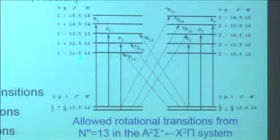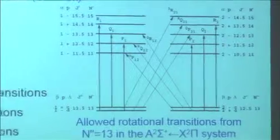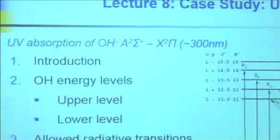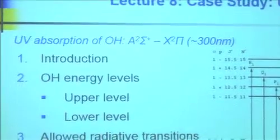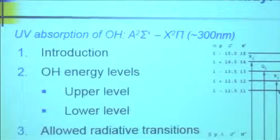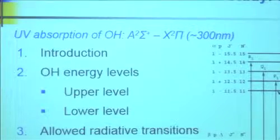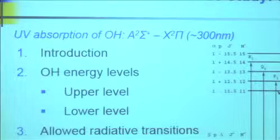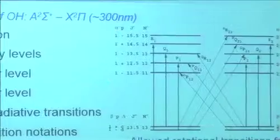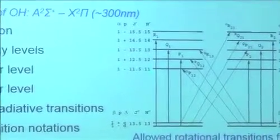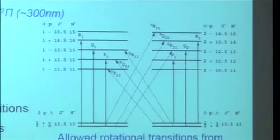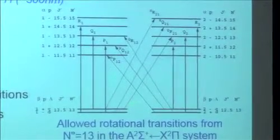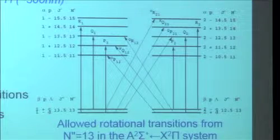Now up in the A²Σ case — lambda is zero. This is analogous to the uncoupled case I showed for oxygen. Each of these has ones (J equals N plus a half) and twos. All these arrows: three, six, nine, twelve — there are 12 possibilities total. Some are shown with lighter lines — those are the crossover ones with two subscripts. They're weak; they're called satellite bands.